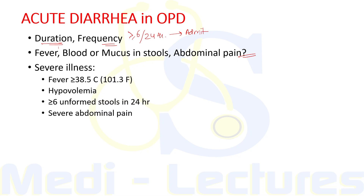Severe illness is characterized by any one of the following: fever more than 38.5 degrees Celsius, presence of hypovolemia or dehydration, six or more unformed stools in 24 hours, or severe abdominal pain.